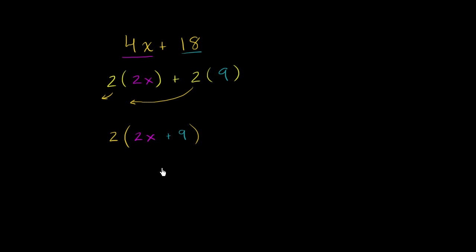2 times 2x plus 9. Let's do this again. So let's say that I have 12 plus 32x. Actually, just to get a little bit of variety here, let's put a y here, 12 plus 32y.